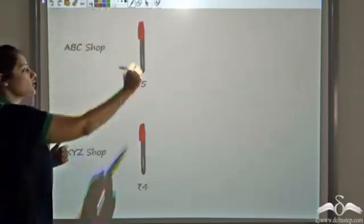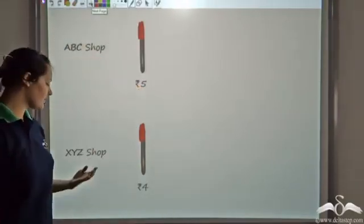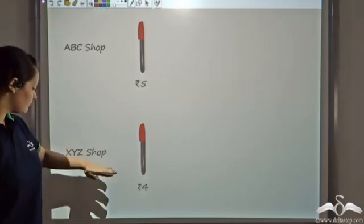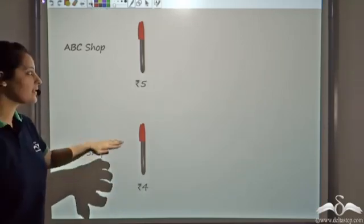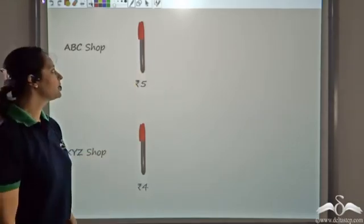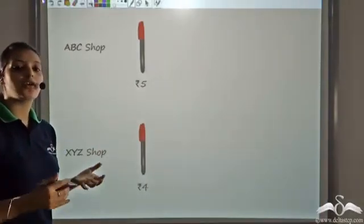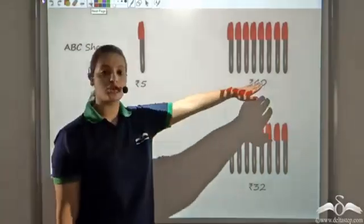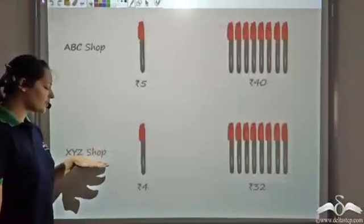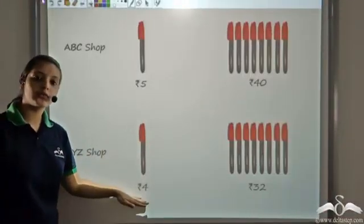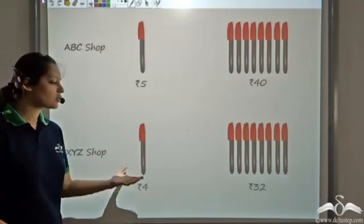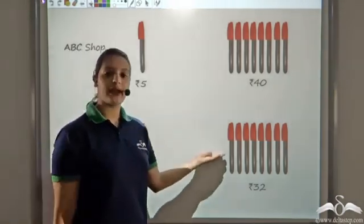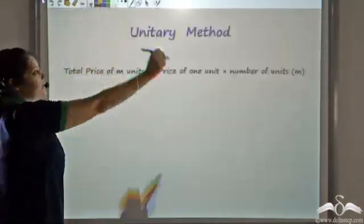So now we know the price of 1 pen in both shops: ABC shop sells 1 pen for Rs 5 and XYZ sells 1 pen for Rs 4. Clearly, XYZ shop is selling the same pen at a lesser price. Knowing the cost of 1 pen, we found the cost of 8 pens — Rs 40 at ABC and Rs 32 at XYZ. This is precisely what the unitary method is.